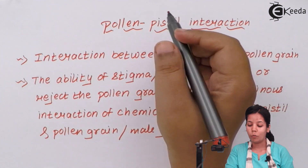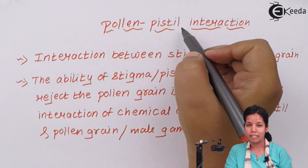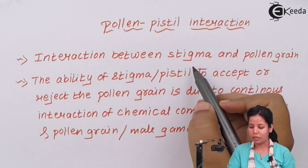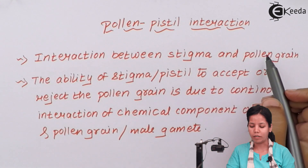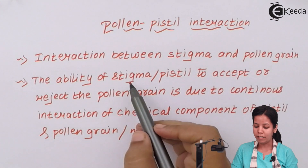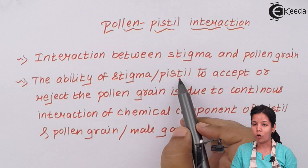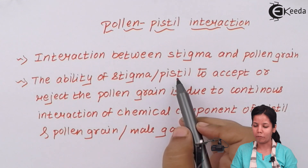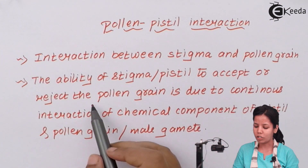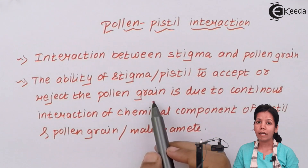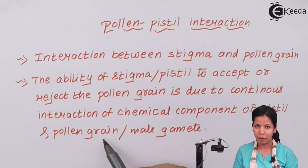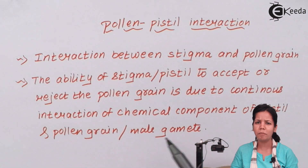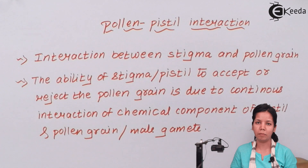In simple language, pollen-pistil interaction means the interaction between the stigma and the pollen grain. The ability of the stigma or pistil — the female gametophyte — to accept or reject the pollen grain is due to continuous interaction between the pollen grain, the male gametophyte, and the pistil or female passage or stigma.